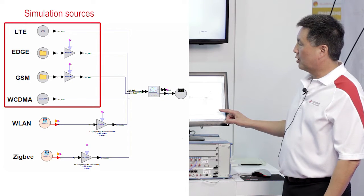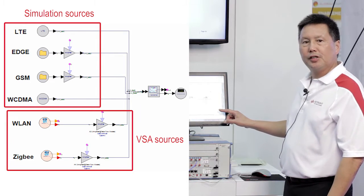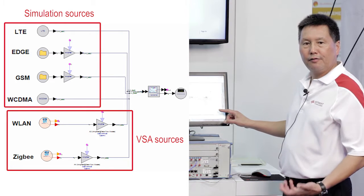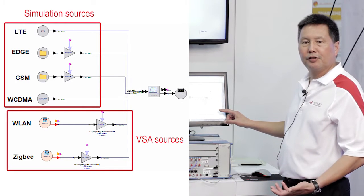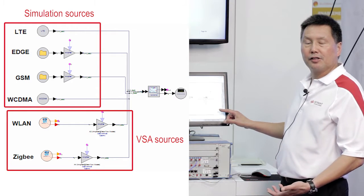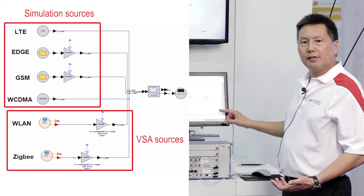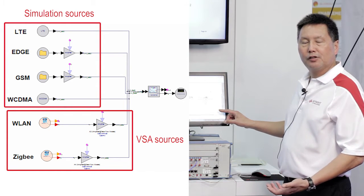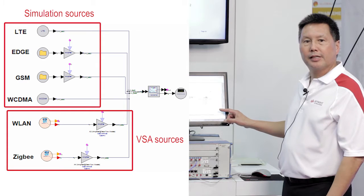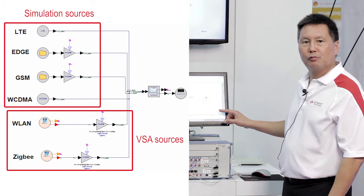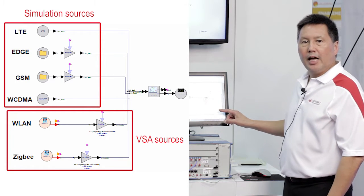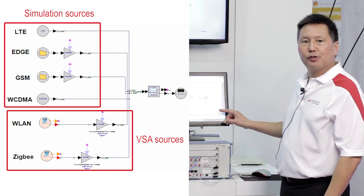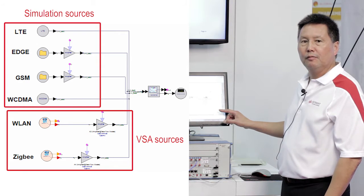For wireless LAN and ZigBee, you'll notice it's using our VSA software. We typically consider VSA analysis software, but in SystemVue there's also a VSA source. What it allows you to do is capture signals with Keysight test equipment and read those captured waveforms or recordings back into SystemVue.